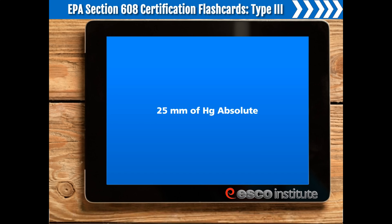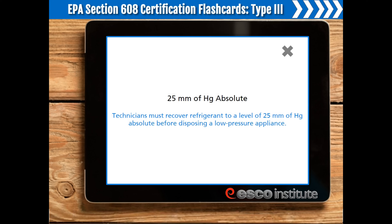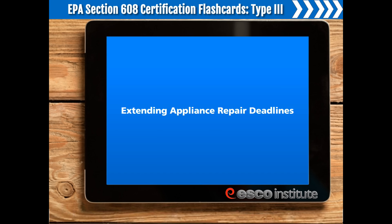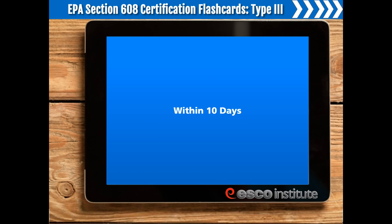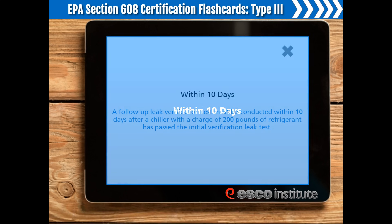25 mm of mercury absolute. Technicians must recover refrigerant to a level of 25 mm of mercury absolute before disposing of a low-pressure appliance. Extending appliance repair deadlines. A certified service technician not being available cannot be used as a reason to extend the appliance repair deadlines. Within 10 days. A follow-up leak verification test must be conducted within 10 days after a chiller with a charge of 200 pounds of refrigerant has passed the initial verification leak test.